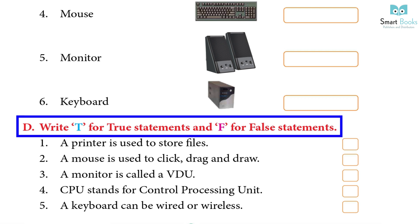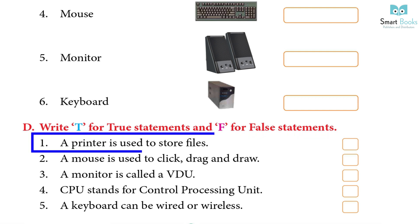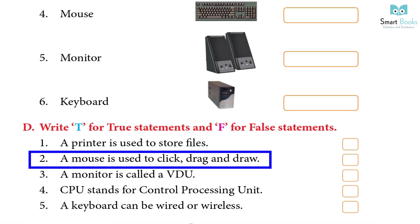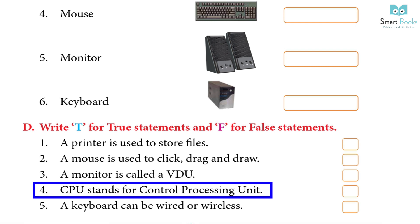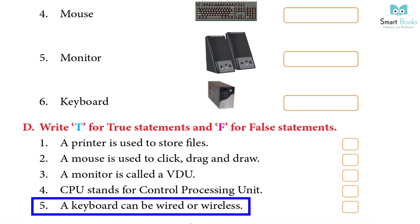Write T for true statements and F for false statements: A printer is used to store files — False. A mouse is used to click, drag and draw — True. A monitor is called a VDU — True. CPU stands for Control Processing Unit — False. A keyboard can be wired or wireless — True.